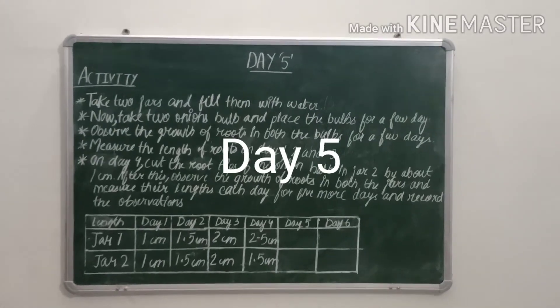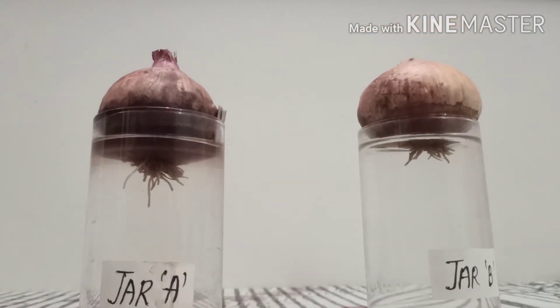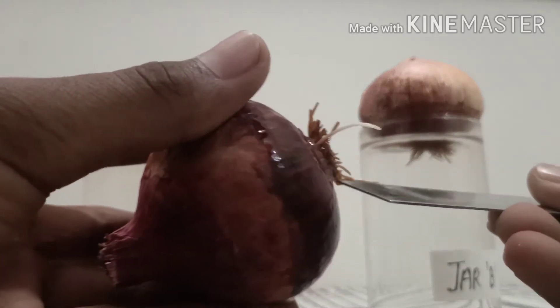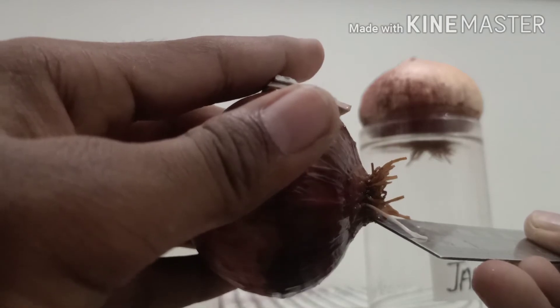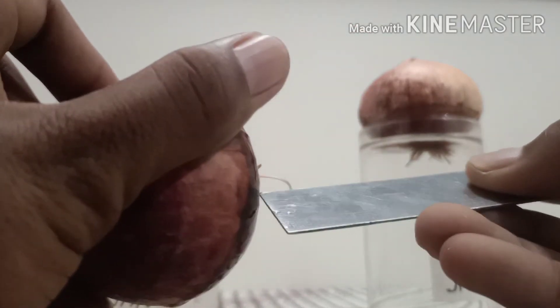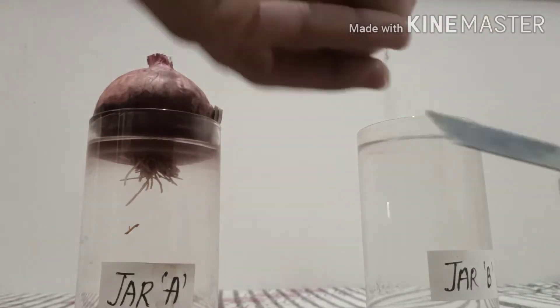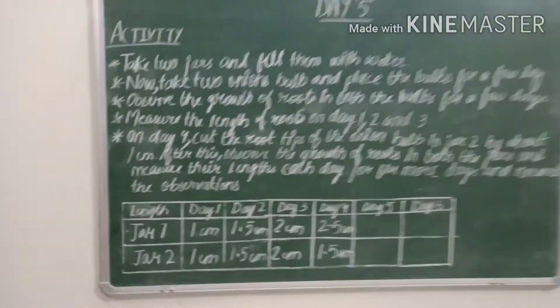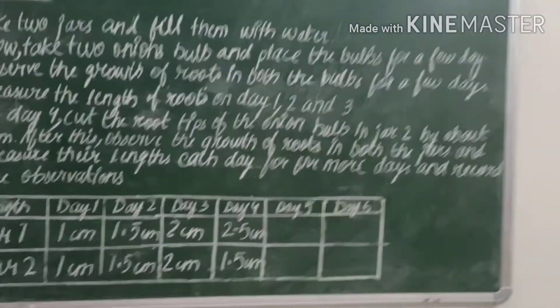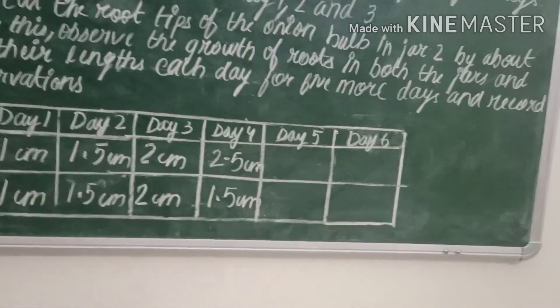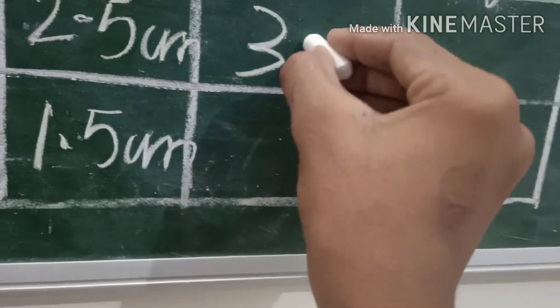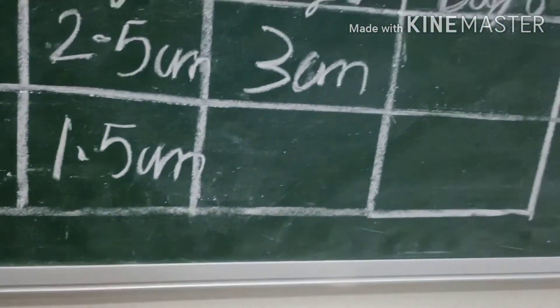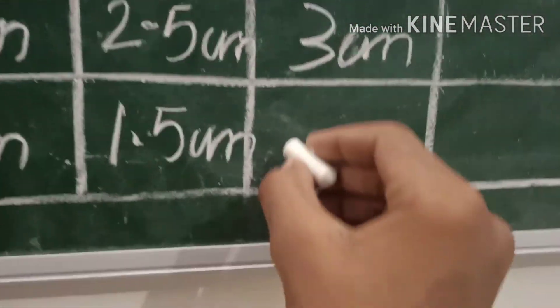Hello everyone, this is day five of the activity and now we are going to measure the jars. Jar one is about three centimeters, as you can see. The jar whose roots we cut shows no development. So this activity is working. Jar one is about three centimeters and jar two remains the same as day four.